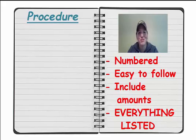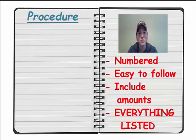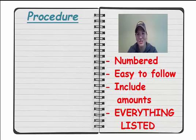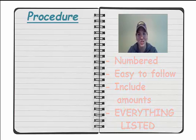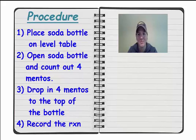Let's check your procedure. A good procedure is numbered and easy to follow. You've included amounts and everything that you've done is listed. A procedure needs to be replicated — someone else should be able to take that set of directions and repeat the process, doing exactly the same thing you did.